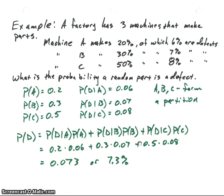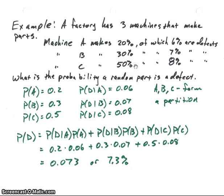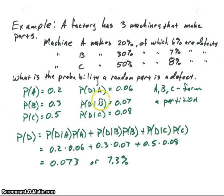Let's look at an example. Suppose we have a factory with three machines — A, B, and C — that make all the parts. Machine A makes 20% of the parts, B makes 30%, and C makes 50%. Those add up to 100%, so these three machines form our partition. The probability that A made a part is 0.2, B is 0.3, and C is 0.5.